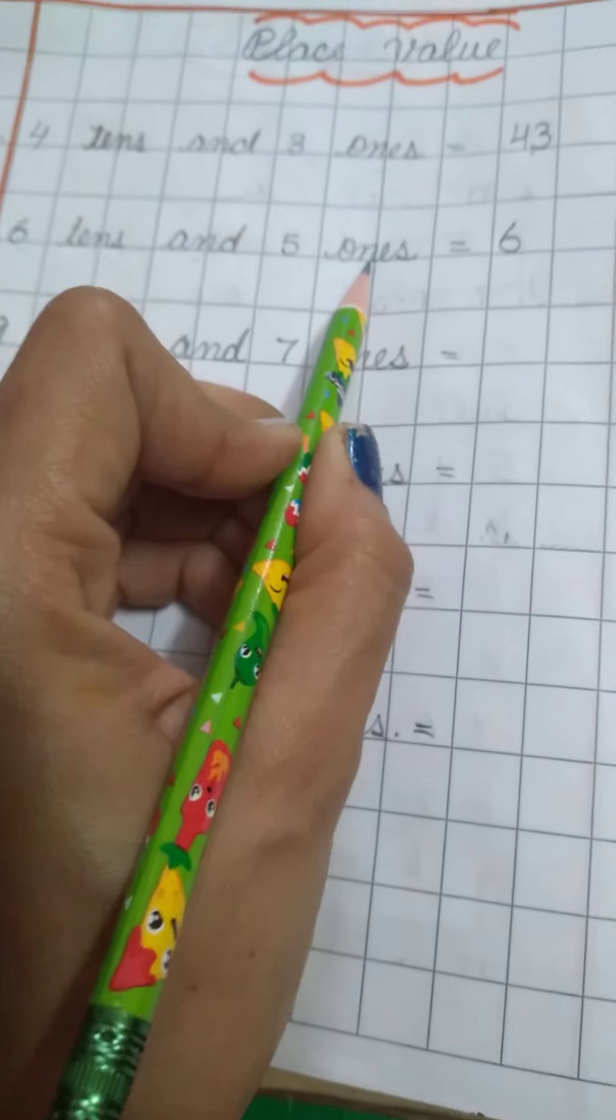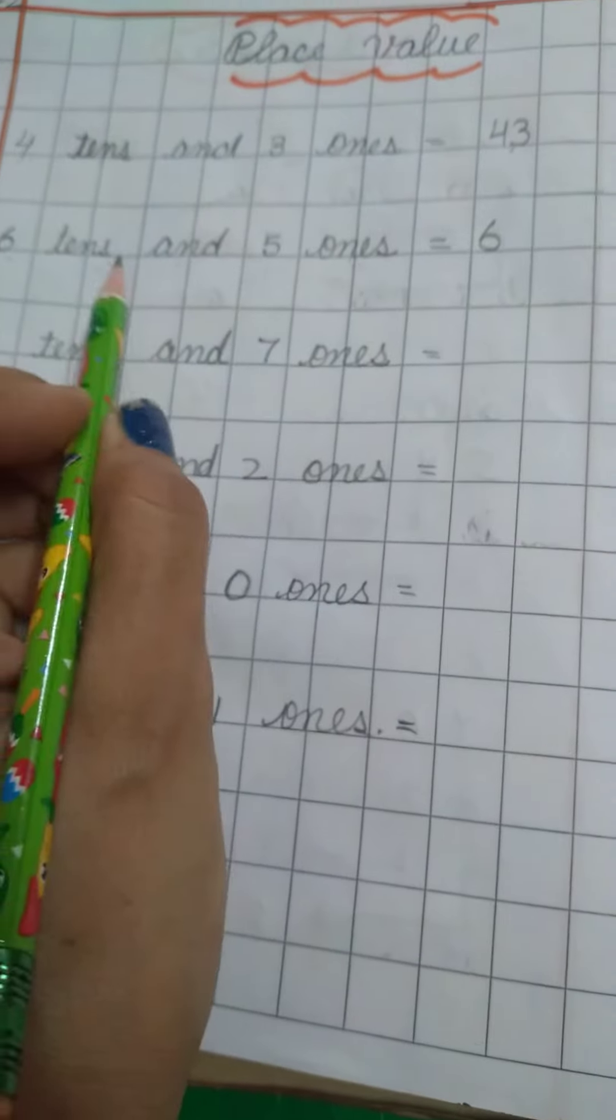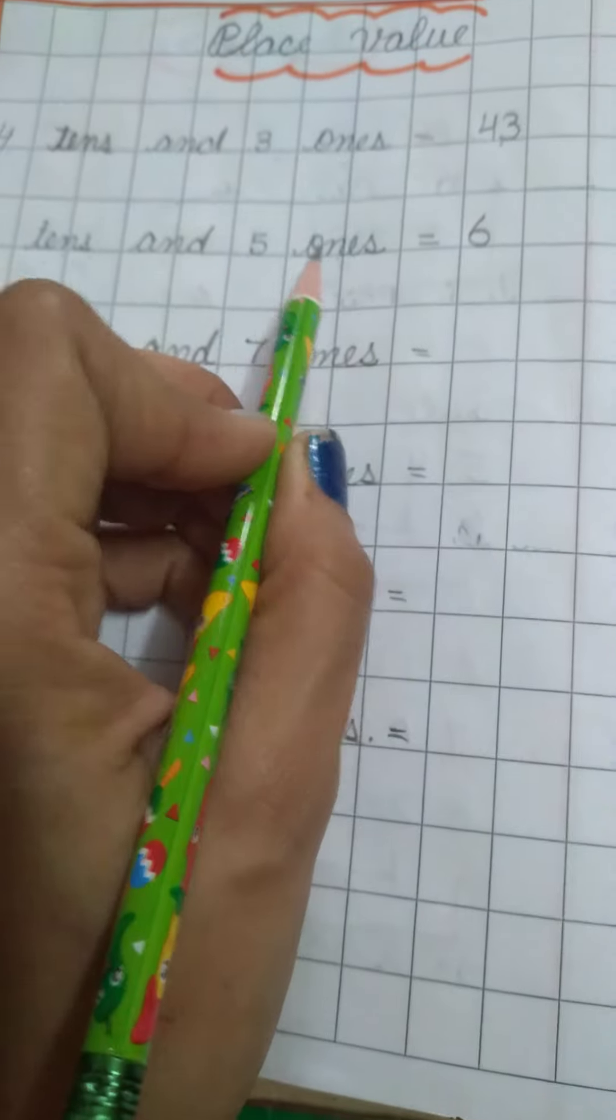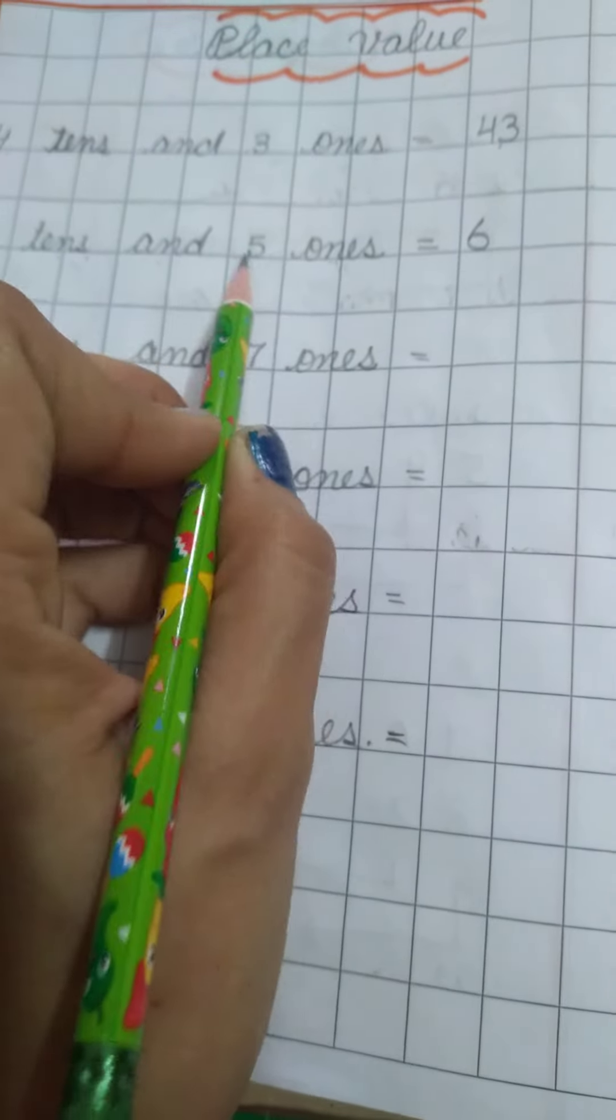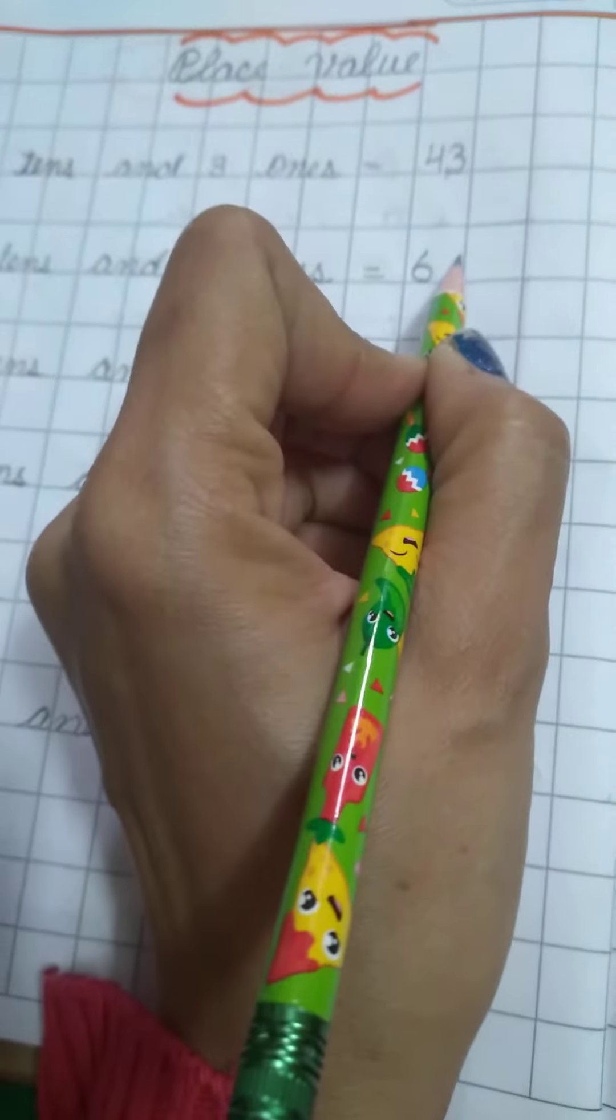And the place value of 5? Ones are smaller, tens are larger. So 5's place value is ones. The complete number is 65.